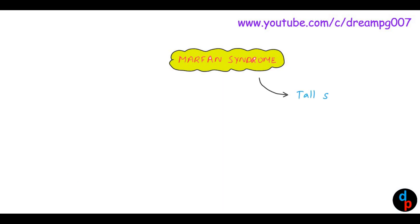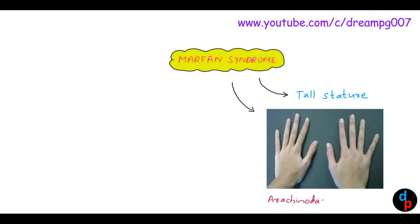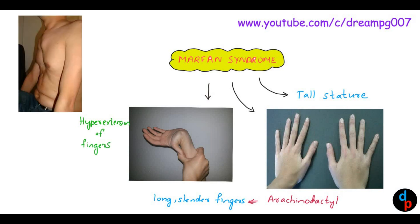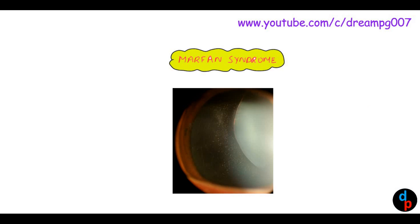Marfan Syndrome is characterized by tall stature and arachnodactyly, which means long and slender fingers. It is also characterized by hyperextension of fingers because of joint laxity. Pectus excavatum is also seen in Marfan Syndrome. In the eye, we can see ectopia lentis, that is subluxation of the lens, most commonly subluxated to a superior temporal location.